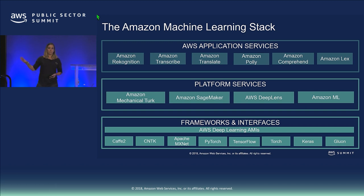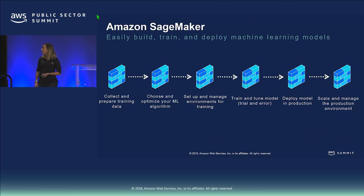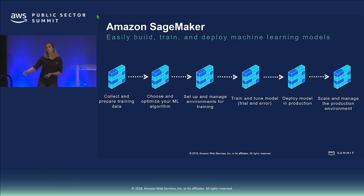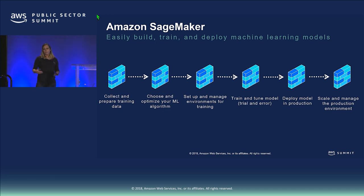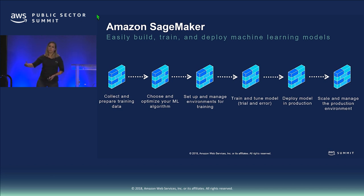Today we're going to spend time really emphasizing Amazon SageMaker. SageMaker was released at re:Invent 2017, and it's really built to help streamline the process of getting a model built and then put into production. Whenever you start building a machine learning model, there are quite a few steps, and many customers end up not being able to get their model into production because they keep hitting barriers.